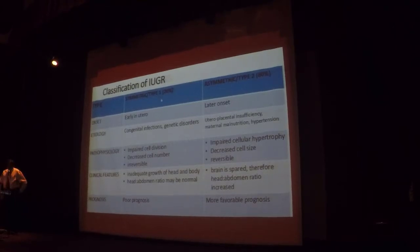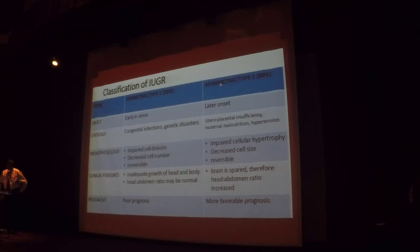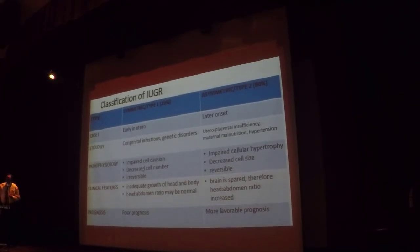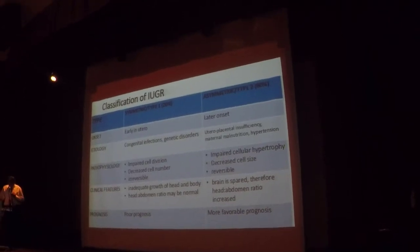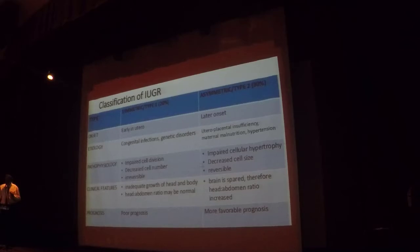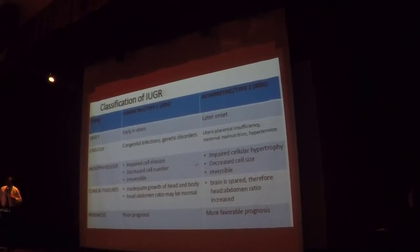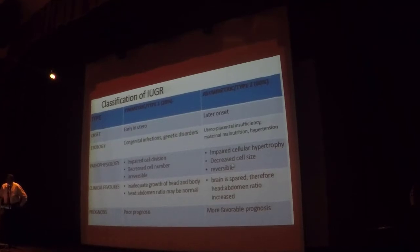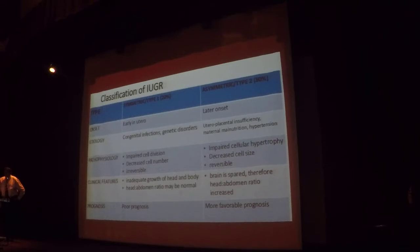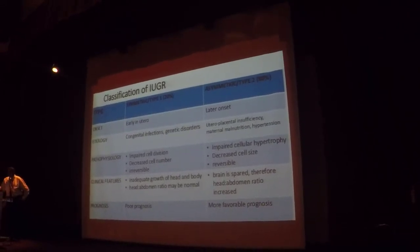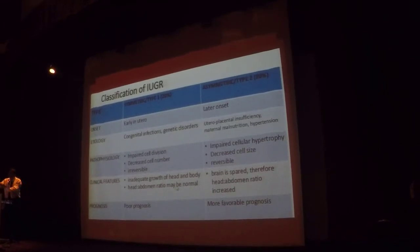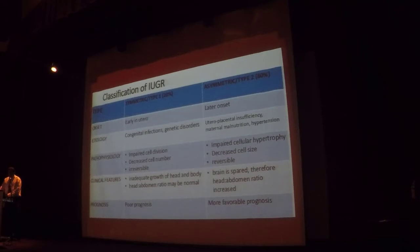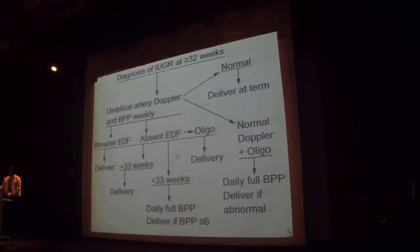Symmetrical IUGR accounts for about 20% of cases; asymmetrical is more common. The pathophysiology differs: symmetrical IUGR impacts cell division from the beginning — decreased cell number, which is irreversible. Asymmetrical IUGR impacts cellular hypertrophy — decreased cell size — which is a reversible condition. Clinical features of symmetrical IUGR include inadequate growth of both head and body, with a normal HC-AC ratio because they are parallel. In asymmetrical IUGR, the brain is spared, so the HC-AC ratio increases. The prognosis for symmetrical IUGR is poorer compared to the asymmetrical type.